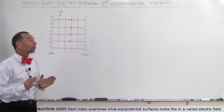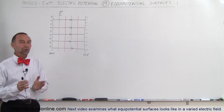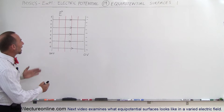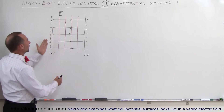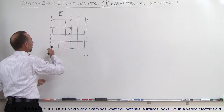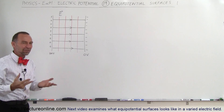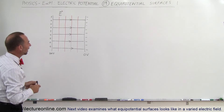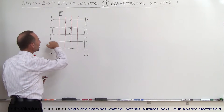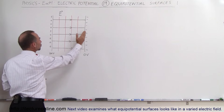Welcome to ElectronLine. Now we're going to talk about equipotential surfaces. Let's assume we have two metal plates — one that has positive charge on it, the other one that has negative charge on it, kind of like capacitor plates. There's an electric field between them, directed from the positive to the negative charge.